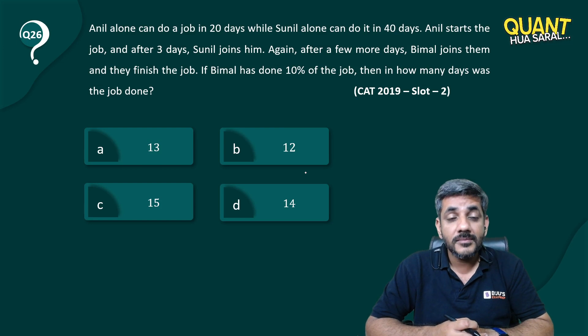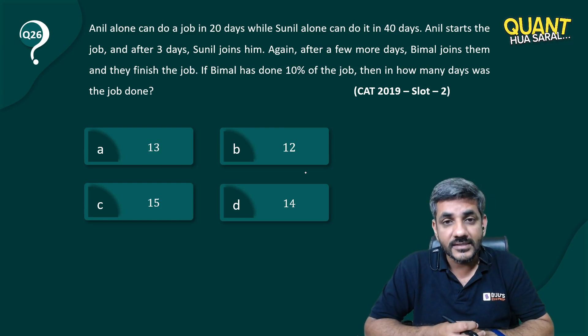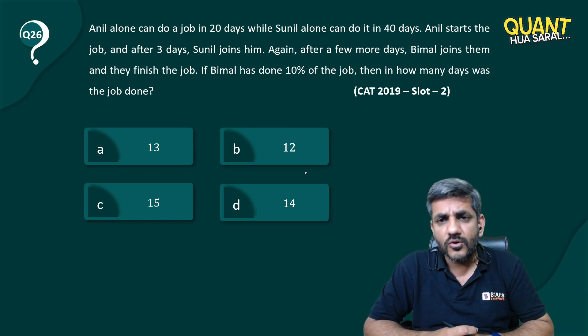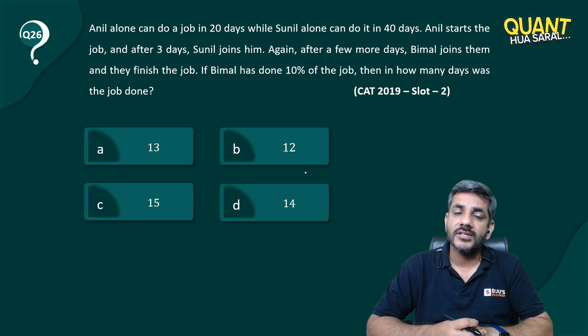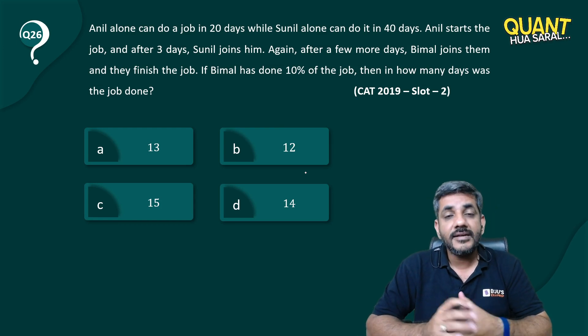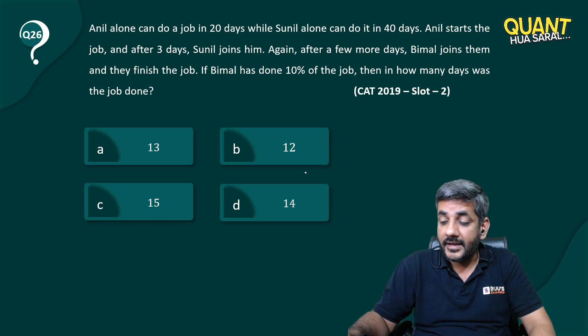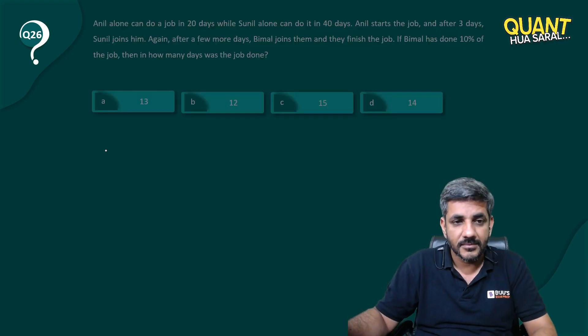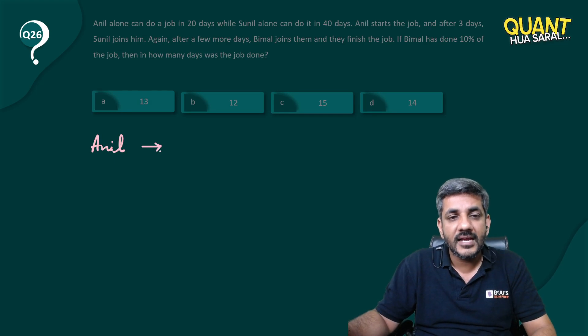Anil starts the job and after 3 days Sunil joins him. Again, after a few more days, Bimal joins them and they finish the job. If Bimal has done 10% of the job, then in how many days was the job done? Let's start talking about it.